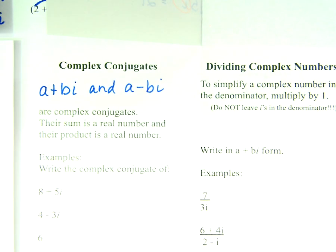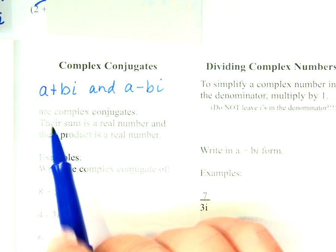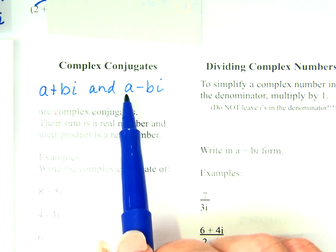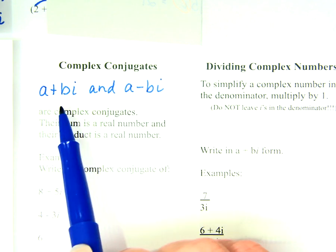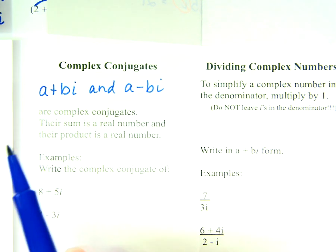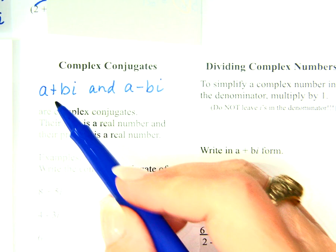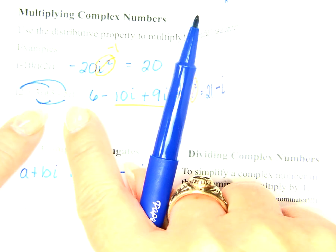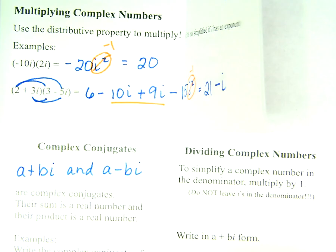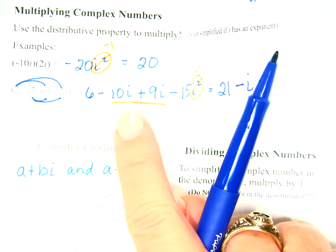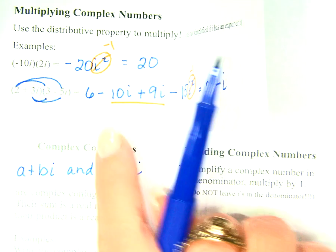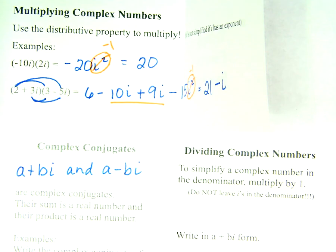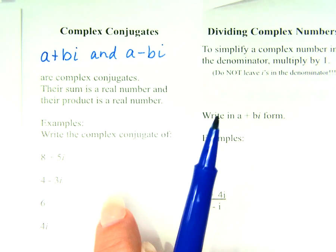Their sum is a real number and their product is a real number. If I added them: a plus a is 2a, and bi plus negative bi is zero. So the sum is 2a — a real number. If I multiplied them out, the middle terms would cancel and I'd end up with a squared term and an i squared term, giving just the real part. So let's practice finding complex conjugates. The conjugate of 8 plus 5i is 8 minus 5i. The conjugate of 4 minus 3i is 4 plus 3i.